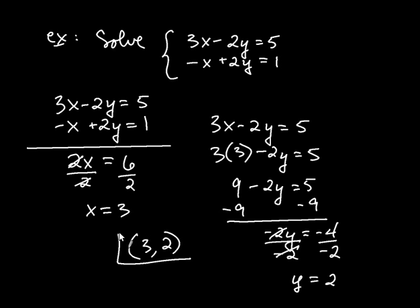So the meaning of that is that these two lines, they cross, they intersect at the point (3, 2). That's what it means to solve a system of linear equations. Find the point or points where they intersect.